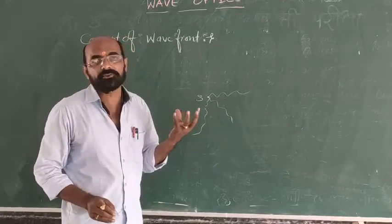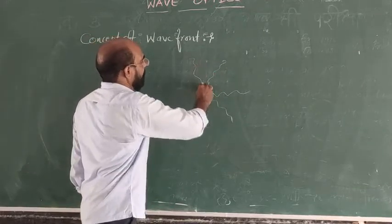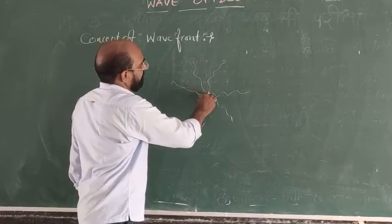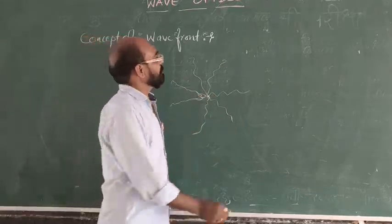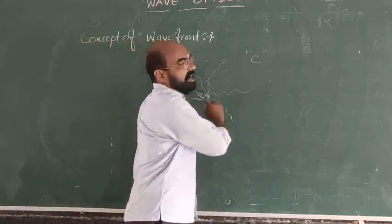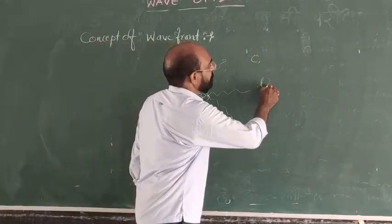There is a light source, and it is in air. The velocity, let us consider, the velocity of light is C. After time T, it will travel a distance D equal to CT in each possible direction.